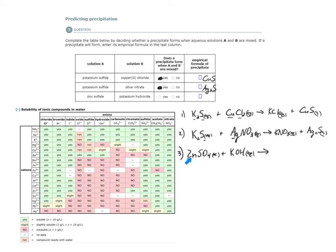My products would be zinc hydroxide and potassium sulfate. So I have zinc hydroxide and potassium sulfate. Let's check the solubility of our products.